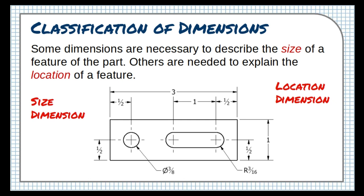Some dimensions are necessary to describe the size of a feature of a part. Others are needed to explain the location of a feature. Some dimensions are there to tell us how big something is, and others are here to tell us exactly where it is.